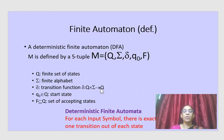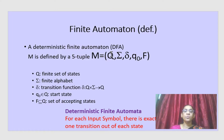Now we go to the formal definition of finite automata. This finite automata machine is defined as a 5-tuple: Q, Sigma, delta, q0, F. So what is Q? Q is a finite set of states — how many states are there in the machine.